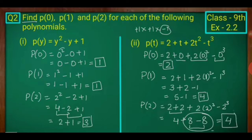Second part: p(t) equals to 2 plus t plus 2t squared minus t cubed. We put 0 in place of t: p(0) equals 2 plus 0 plus 2 times 0 squared minus 0 cubed. All terms with t become 0, so finally we get p(0) equals 2. For p(1), put t equals 1: 2 plus 1 plus 2 times 1 squared minus 1 cubed, giving 2 plus 1 plus 2 minus 1, which equals 4.